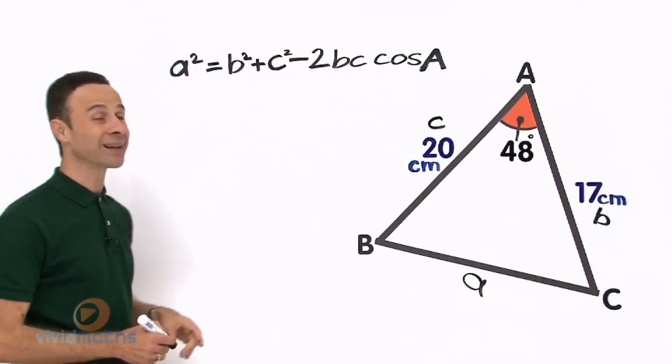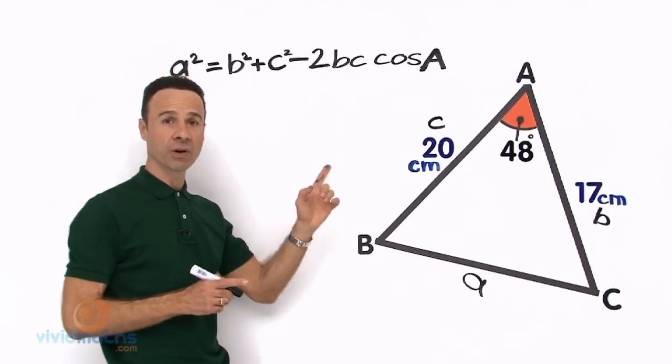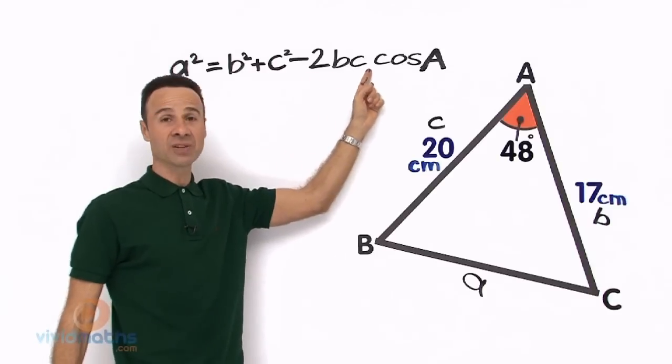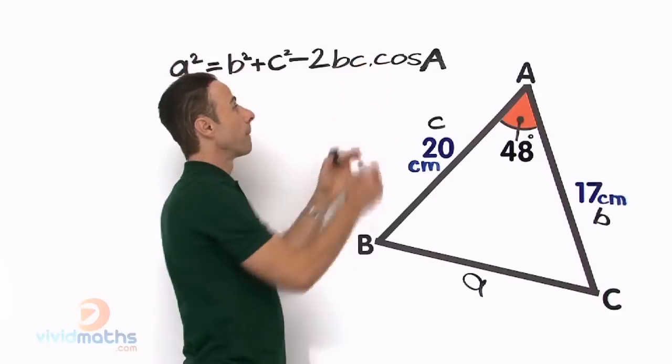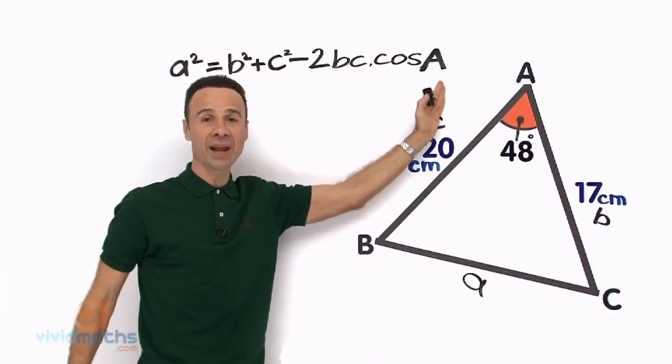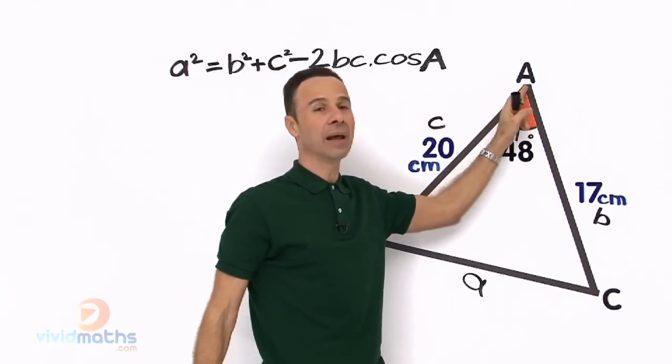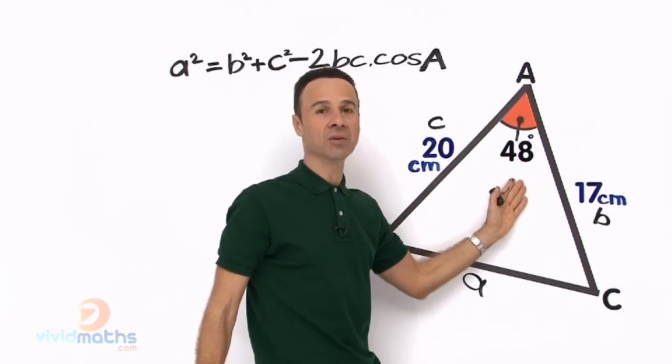So let us take another closer look and continue with this very long formula. Over here we continue with the minus 2bc and then we multiply. There is nothing there; it is actually a dot by cos of alpha, and that alpha or A, that capital A, is actually the capital A angle right here, 48 degrees.